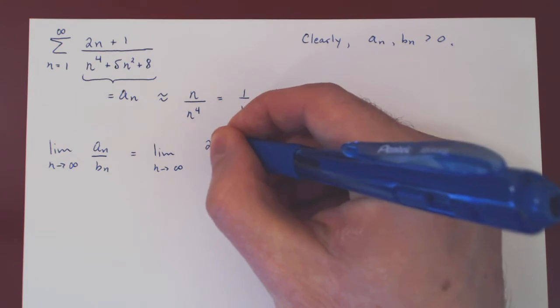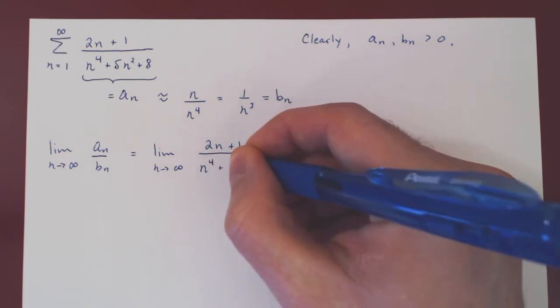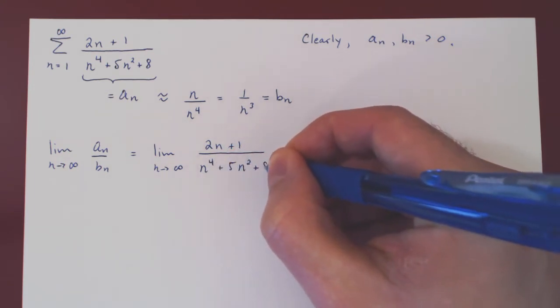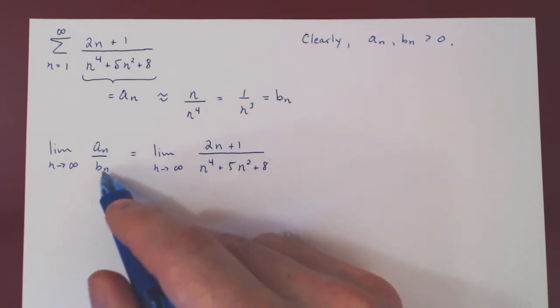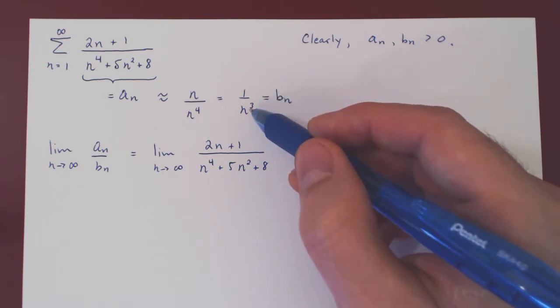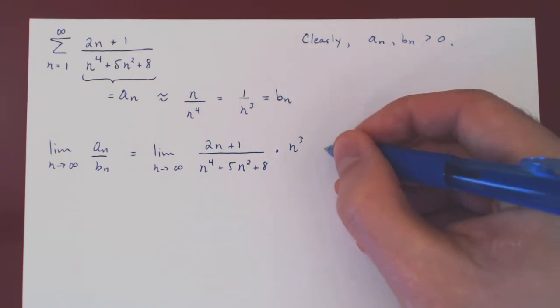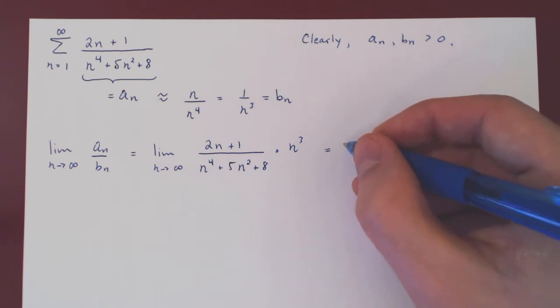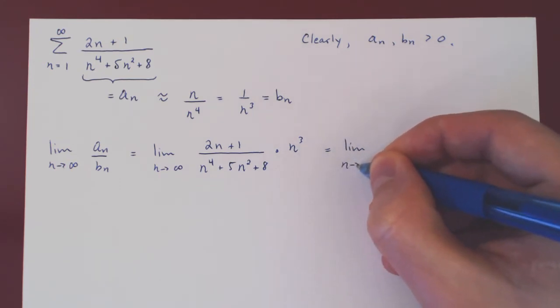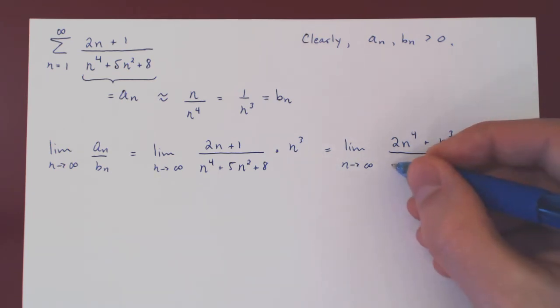So here's AN and we divide now by BN. BN is 1 over N cubed. But if you divide by 1 over N cubed, you can multiply by the reciprocal, which is N cubed over 1, which is simply N cubed. Well, we can multiply out the numerator by N cubed, and we will now have a very simple limit.